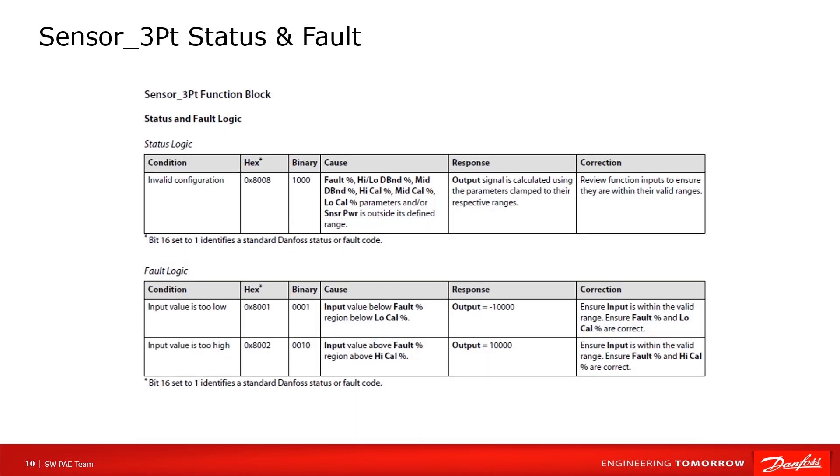Let's look at the output pins of function block Sensor_3PT. When parameters are out of range, we can read a binary data 0x8000 in status pin. When the input is too low or too high, we can read a binary data 0x0001 or 0x0002 in the fault pin.